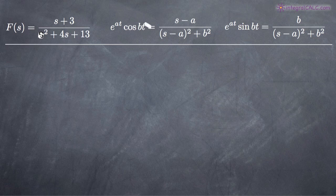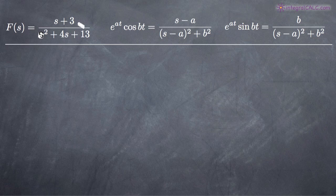The way that we're going to do that is using two formulas: e to the at cosine of bt and e to the at sine of bt. I got these formulas from an inverse Laplace transform table. You'll use them fairly commonly in inverse Laplace transforms. What you should recognize is that in the numerator you have s plus 3, which you can also write as s minus negative 3, which is similar to s minus a. Here a and b are constants in both formulas.